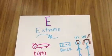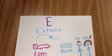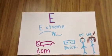E is for extreme. Dovey is in an extreme condition — she is going on trial for murder.